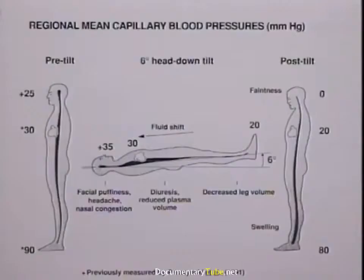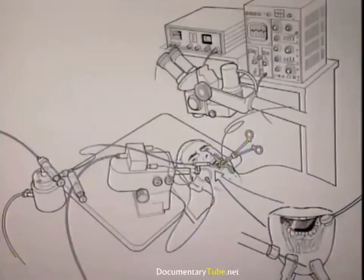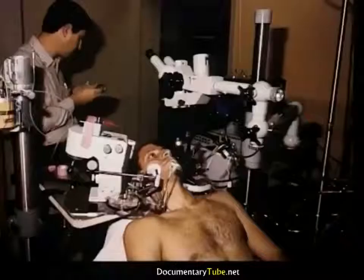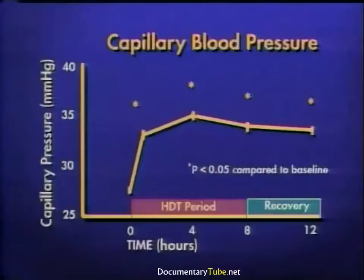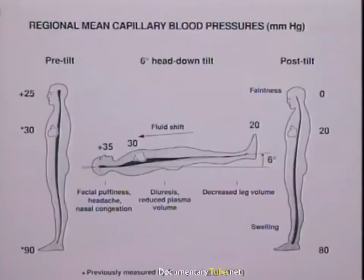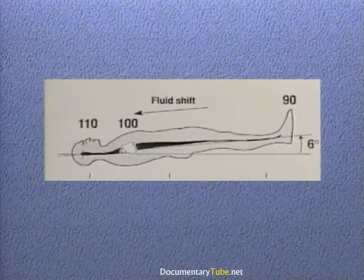To investigate the fluid shift experienced in space, microgravity is simulated on Earth by a six-degree head-down tilt. Placing a person in this position causes a fluid shift similar to that experienced in microgravity. To help scientists understand facial puffiness, seven volunteers were placed in six-degree head-down tilt for eight hours. All four Starling forces were measured periodically. The findings indicated that capillary blood pressure increased and blood colloid osmotic pressure decreased during the first four hours. Interstitial and colloid osmotic pressures did not change significantly. It was therefore determined that increased capillary pressure in the head and decreased capillary pressure in the feet contribute to facial edema during head-down tilt.